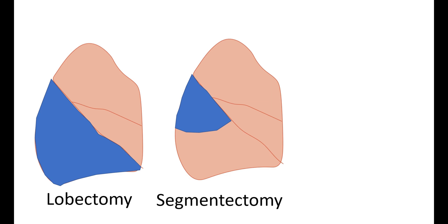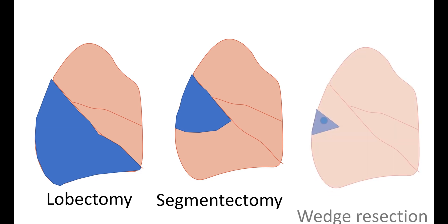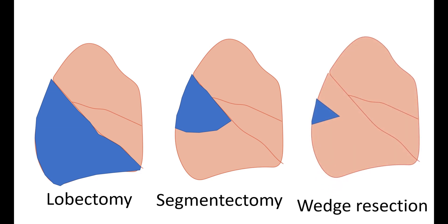Segmentectomy is when you remove an anatomic segment of the lobe of the lung — for our patient, we would perform a superior segmentectomy of the right lower lobe. And a wedge resection is when you remove a non-anatomic portion of the lung — in our patient, it would be removal of the portion of the lung containing the tumor with a rim of normal lung tissue.